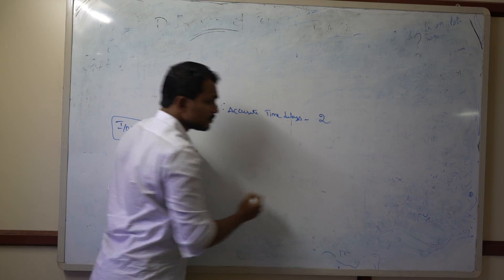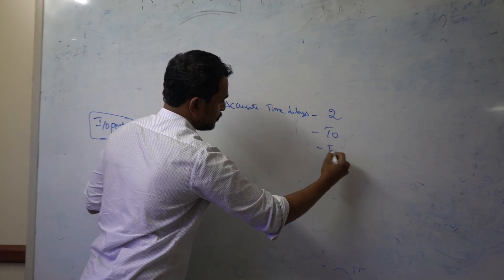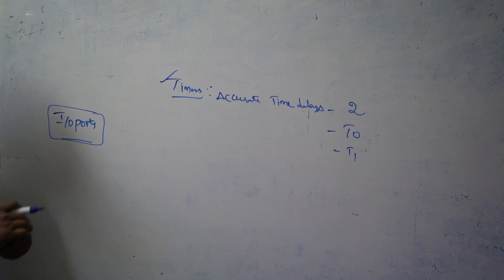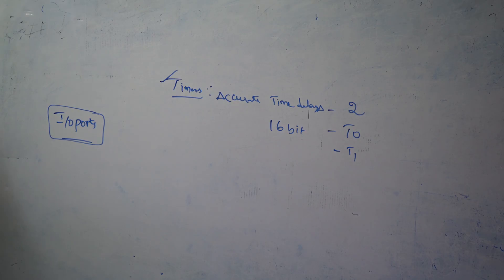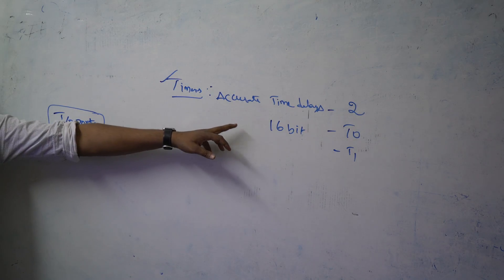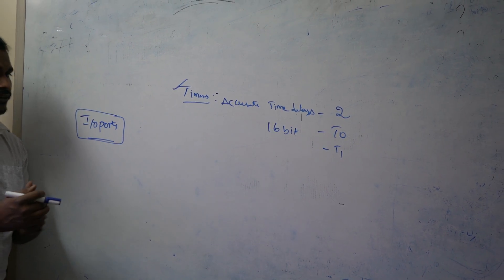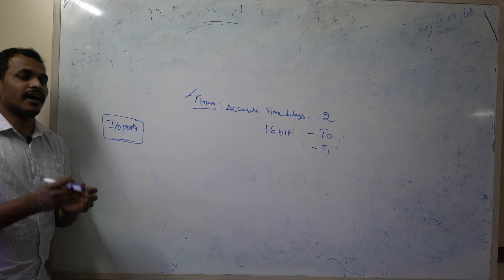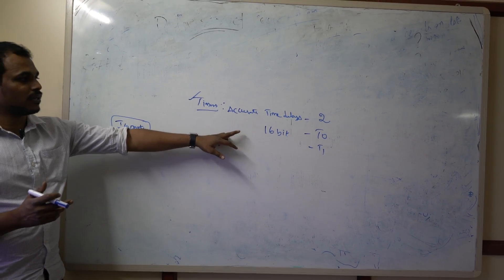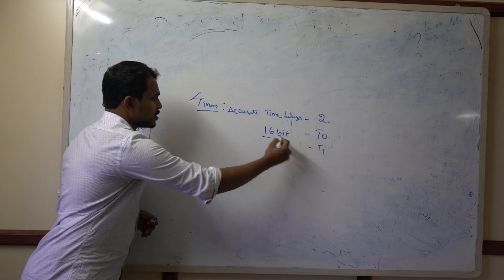How many timers does your microcontroller have? There are two timers — T0 and T1 — and the capacity of both timers within the 8051 microcontroller is 16 bits. Generally, in everyday life we mention time in hours, minutes, and seconds, but here the timers express capacity in bit size. You generate accurate time delays depending on different bit capacities like 8-bit, 16-bit, or 32-bit.